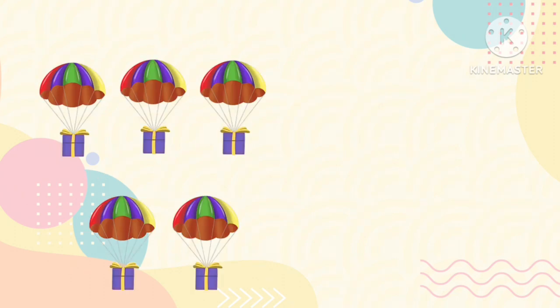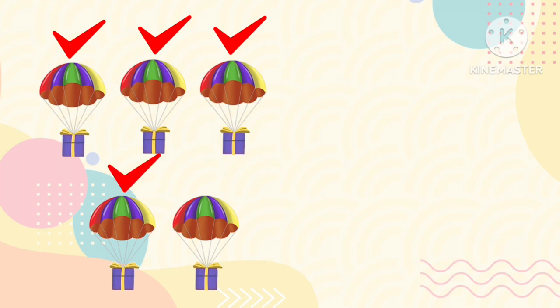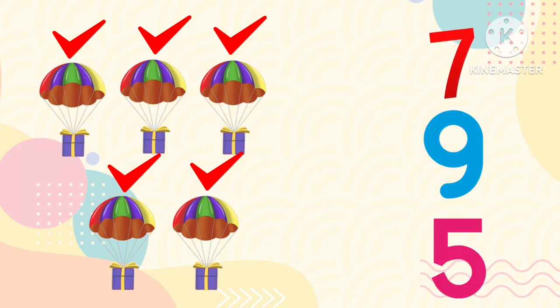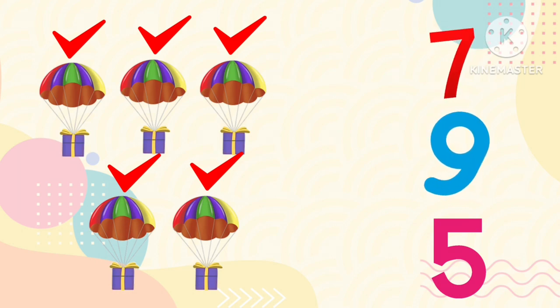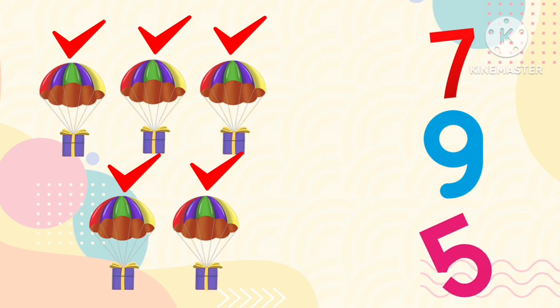Shall we count? One, two, three, four, five. There are five parachutes. Is it five? No. Is it five? No. Is it five? Is it five? No.